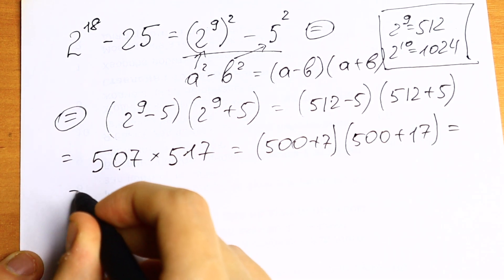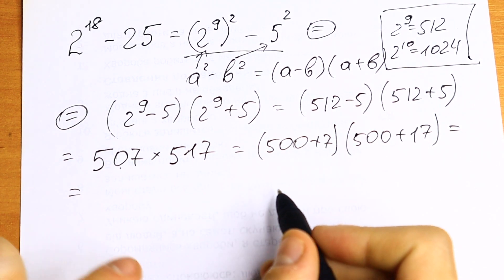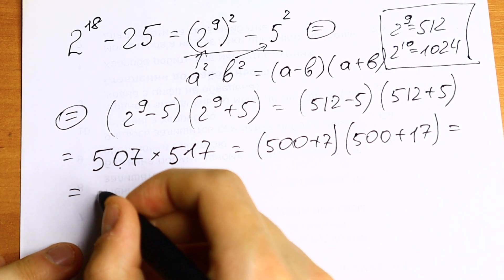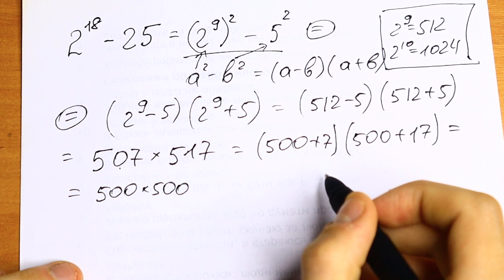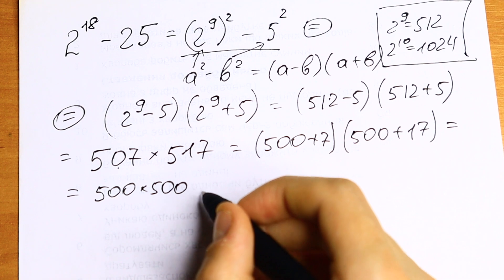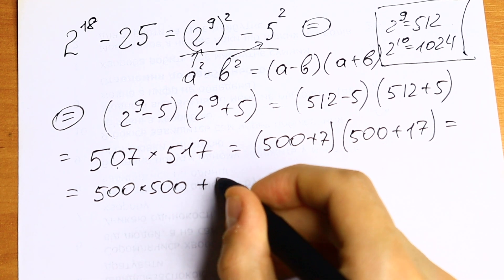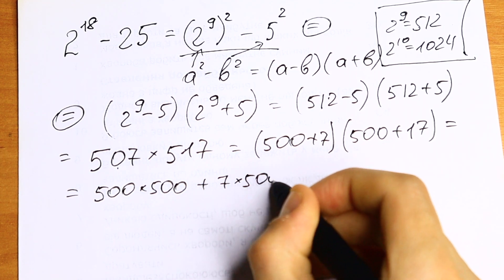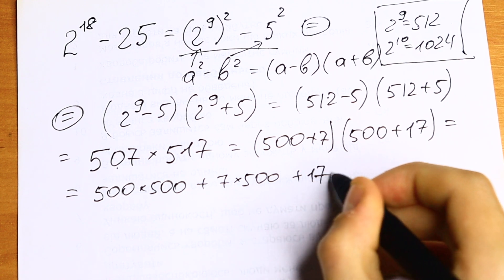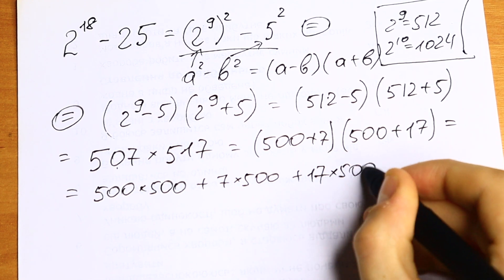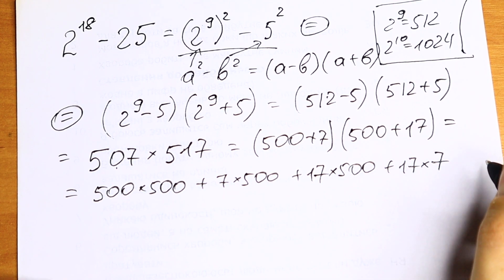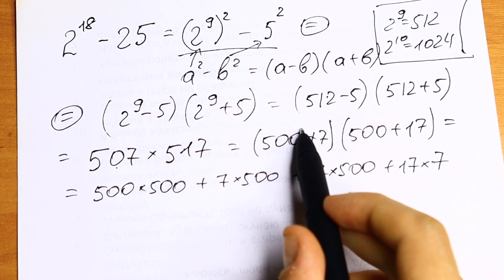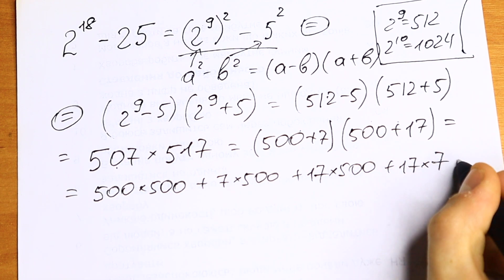What we'll have? Let's multiply this. We'll have 4 elements, 4 products. And we need to sum these 4 products. We'll have 500 times 500. This is our first element. I'm just multiplying parentheses by parentheses. Plus 7 times 500. Plus 17 times 500. And plus 17 times 7. So I'll just rewrite this product of 2 parentheses.